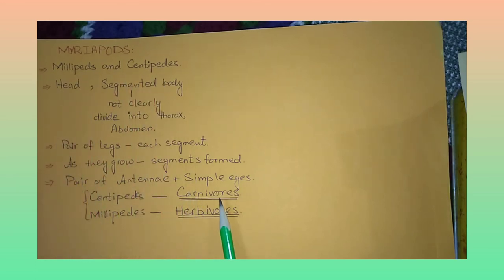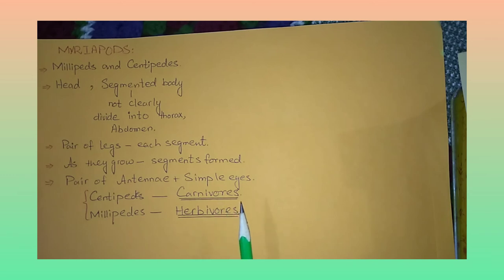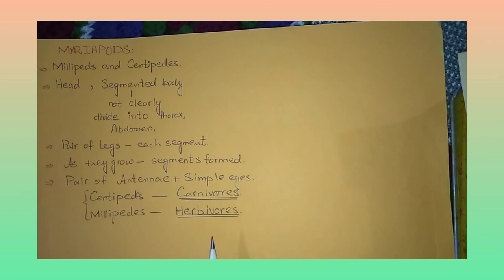Centipedes are carnivores — they depend on other organisms for feeding. Millipedes are herbivores — they find their own food such as green plants, vegetables, and grass. That concludes this topic. If you like the video, please share, subscribe to Zoom Knowledge, and don't forget to press the bell icon. Thank you, bye.